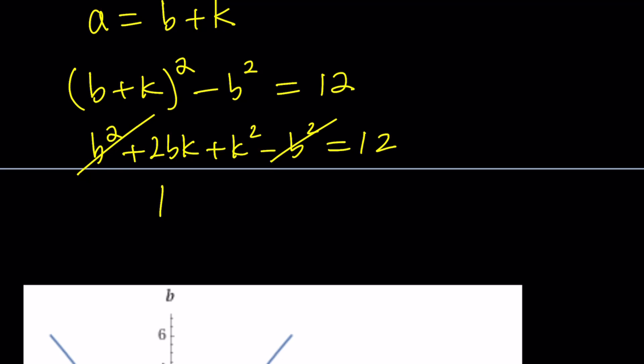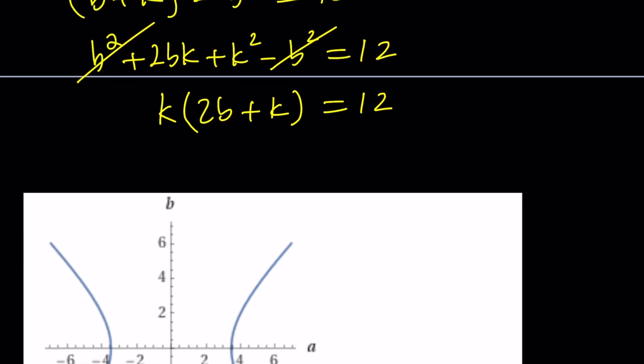We end up with k times 2b - or not 2b, yay, I was able to make that joke - plus k equals 12. Obviously, that's the graph of a² - b² = 12. We talked about it in the previous video.